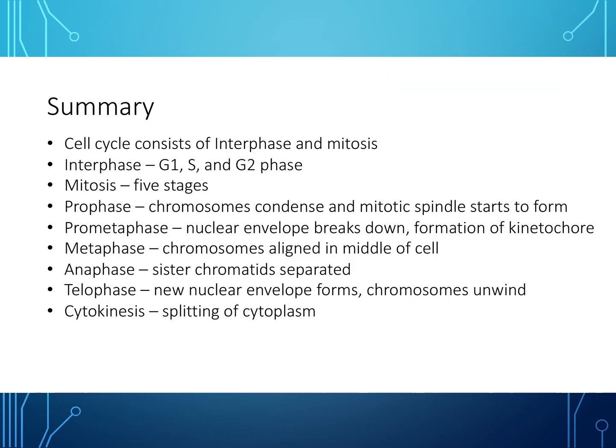To summarize: the cell cycle consists of interphase and mitosis. Interphase is divided into G1, S, and G2 phases, each with a specific role. Mitosis has five stages: prophase, pro-metaphase, metaphase, anaphase, and telophase. In prophase, chromosomes condense and the mitotic spindle starts to form. In pro-metaphase, the nuclear envelope breaks down and the kinetochore forms. In metaphase, chromosomes align in the middle. In anaphase, sister chromatids separate. In telophase, a new nuclear envelope forms and chromosomes unwind. Cytokinesis then occurs, splitting the cytoplasm and resulting in two identical daughter cells.